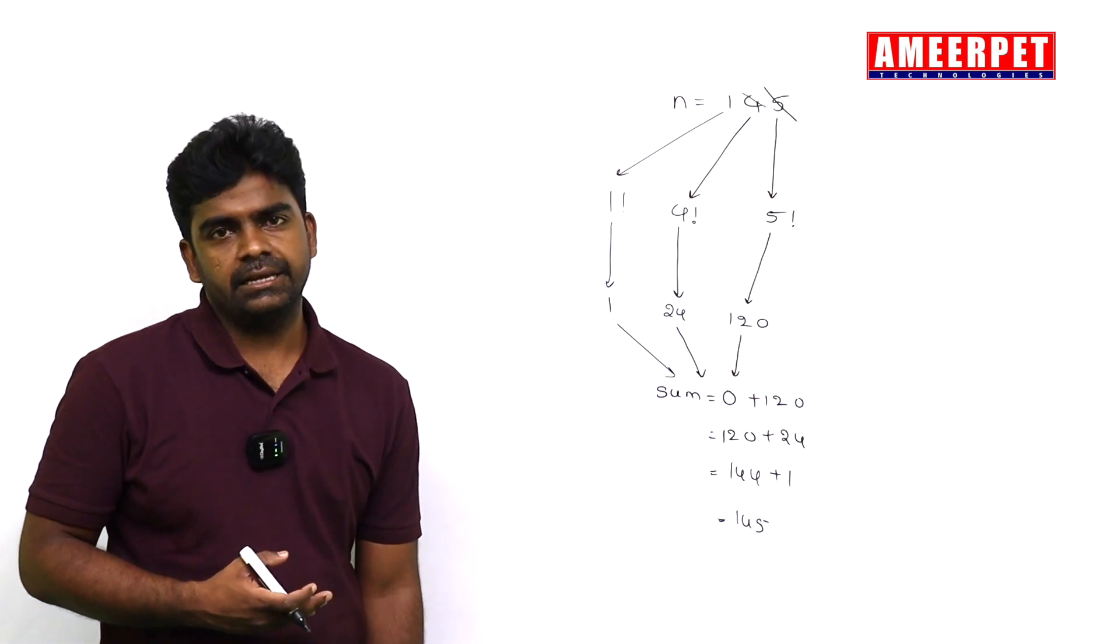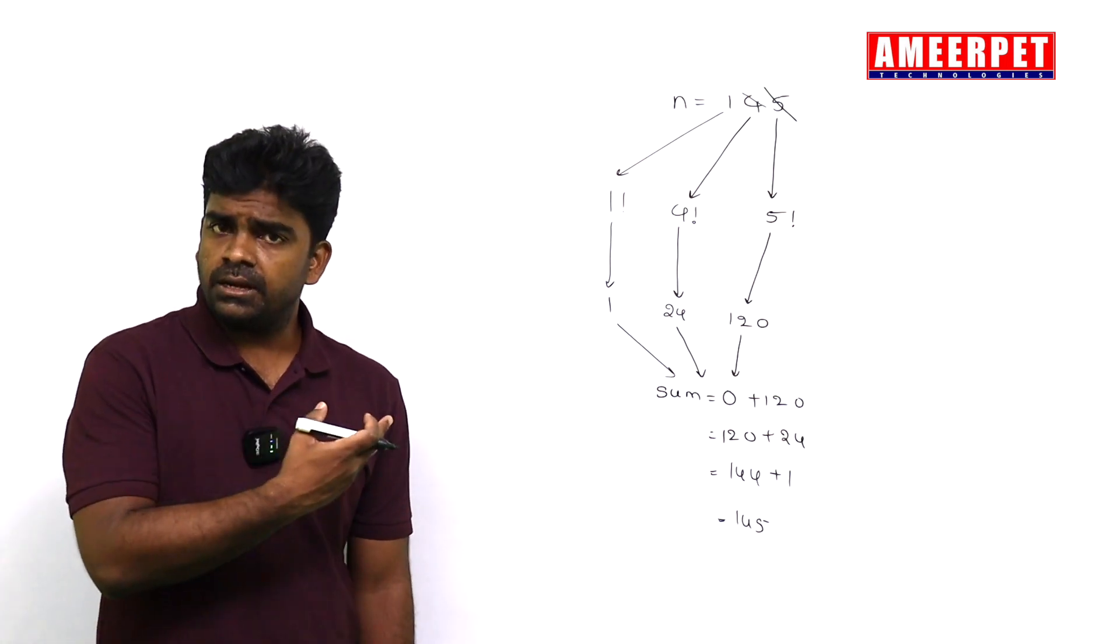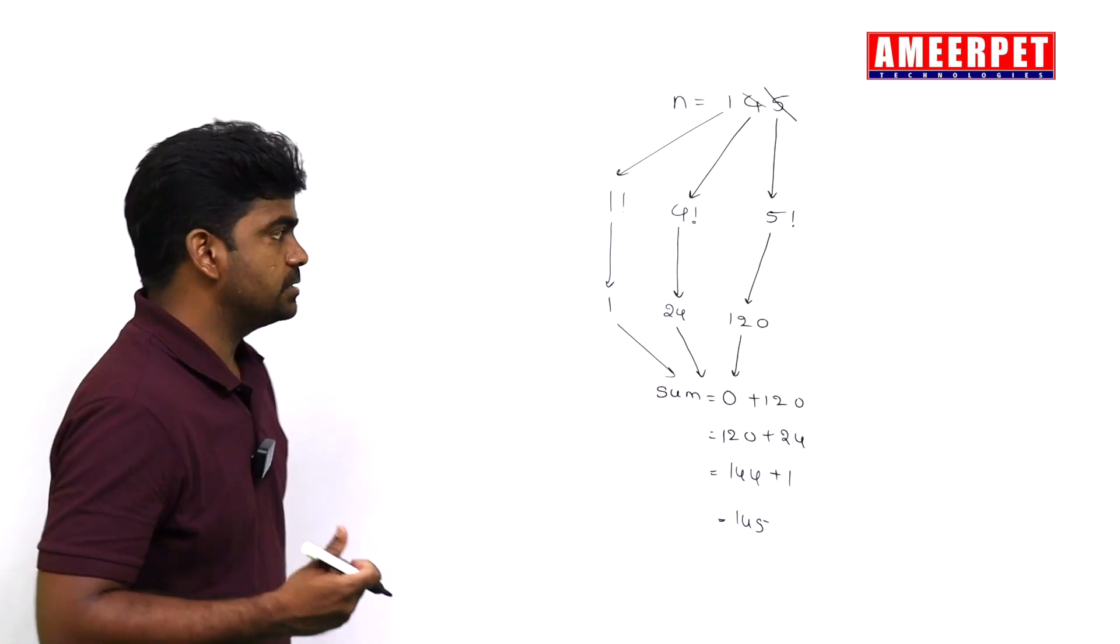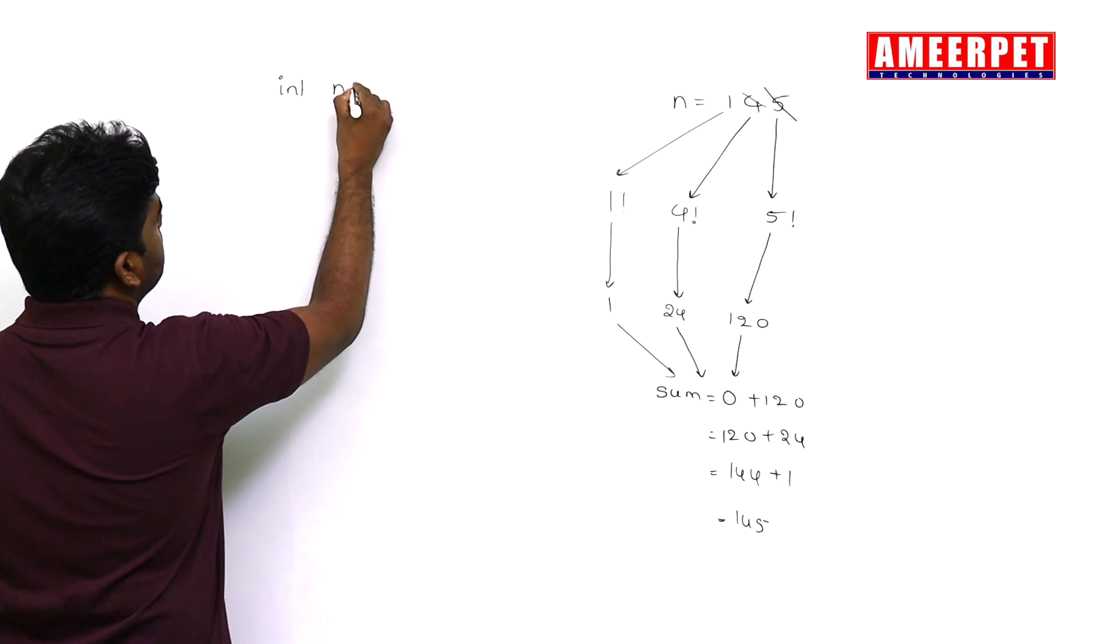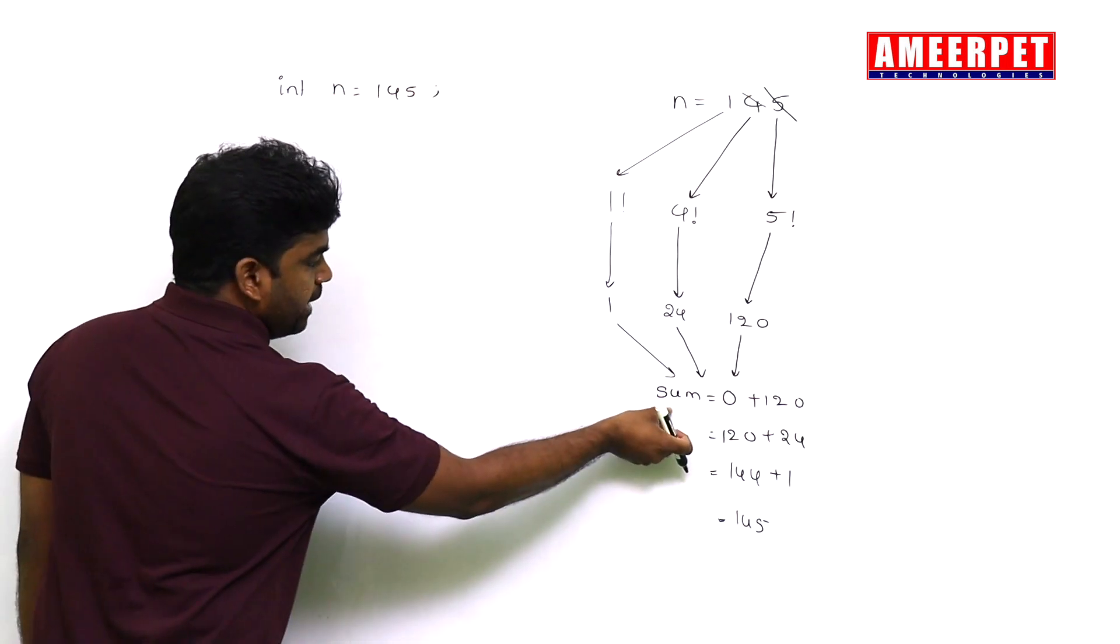So now this is the simple way of finding it because we are learning these kinds of examples from the last 10 to 15 videos in this series. Here I am taking one number, integer n equals to 145.